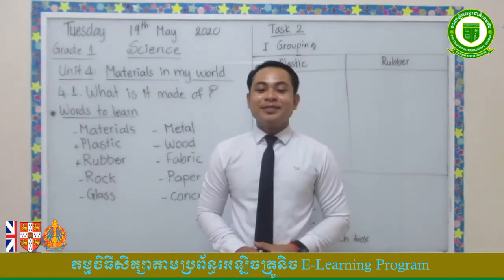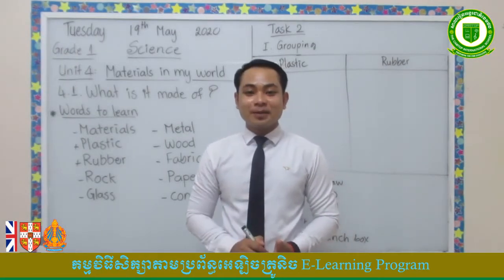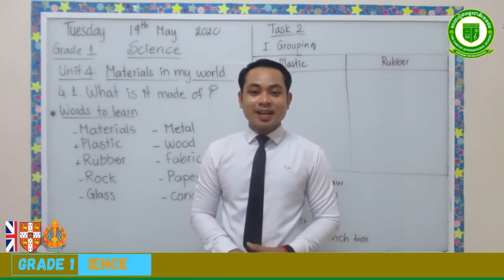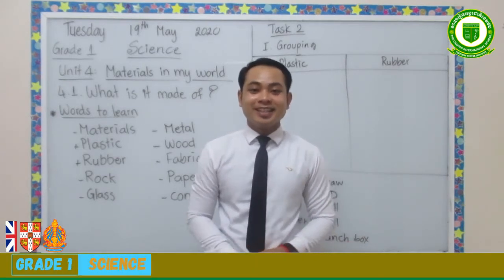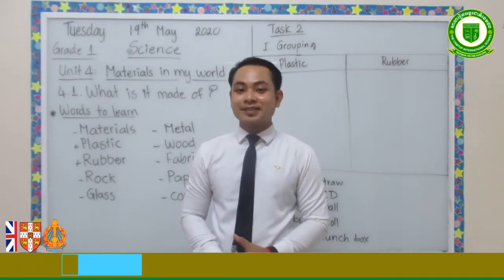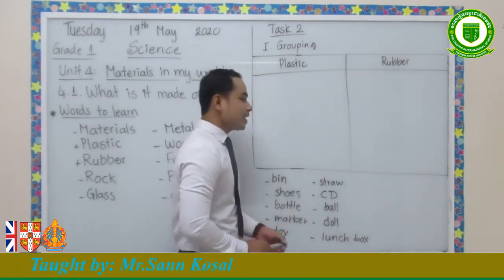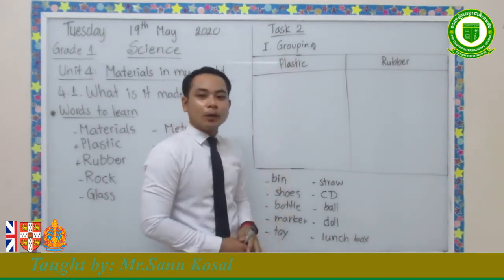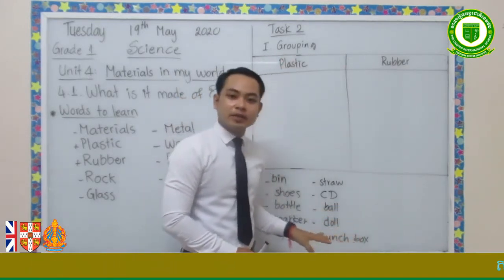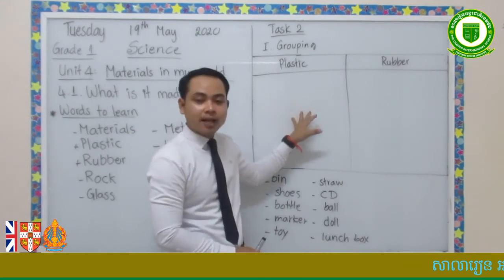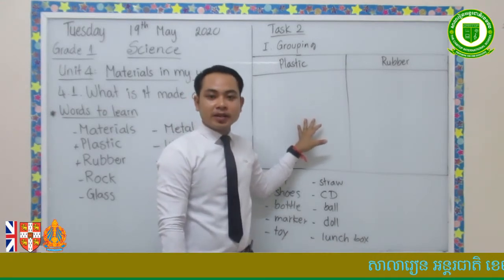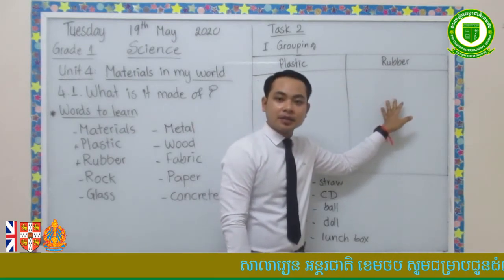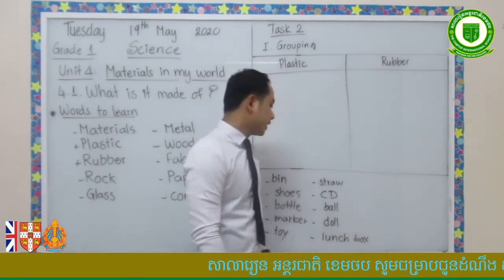Hello again, everybody. Welcome to our second video of our lesson. Did you finish your task? I hope you did. Now we're going to do Task 2. In Task 2, I want you to group the materials in the right column — are these materials made of plastic or are they made of rubber? Take a look at this.